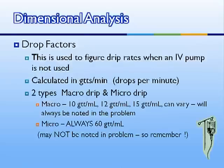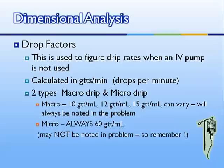We can also use dimensional analysis for drop factor configurations. We use drop factors when no IV pump is available and we're just using the tubing to count drops. It's calculated in drops per minute, and we have two kinds of tubing: macro drip and micro drip. Macro drip tubing varies — it can be 10, 12, or 15 drops per milliliter, and the problem will tell you. But micro drip tubing is always 60 drops per milliliter. If the problem just states micro drip tubing is in use, you must remember that is always 60 drops per milliliter.